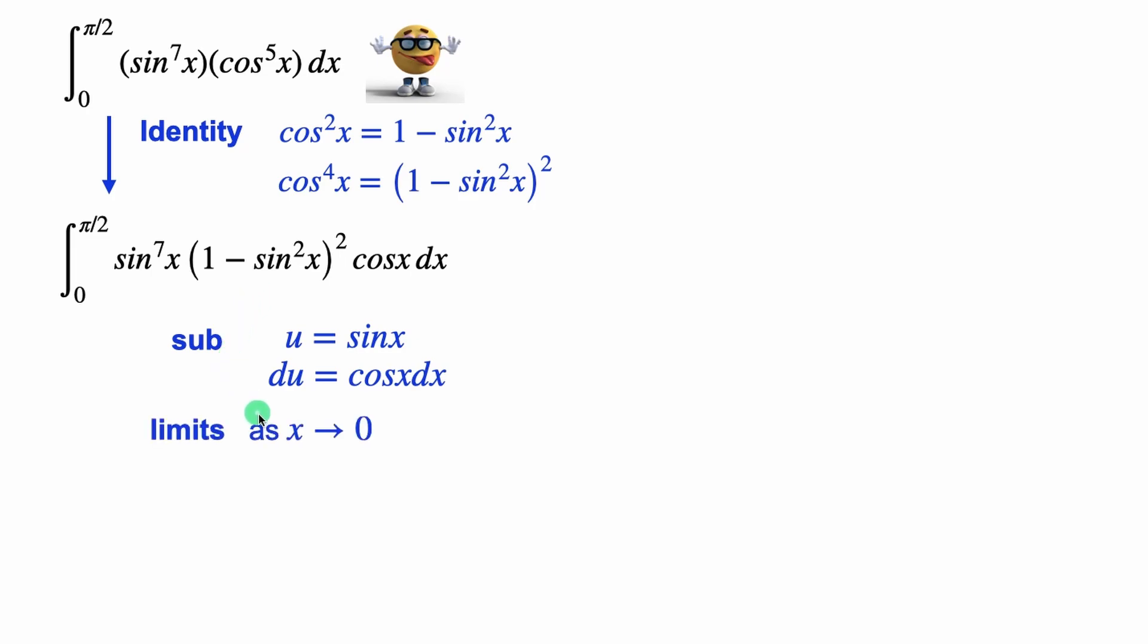Now we've got to remember our limits, so as x goes to 0, that's the first limit, we get sine of 0, so u goes to 0, and in the other limit, as x goes to pi over 2, we have sine of pi over 2, which means u equals 1.